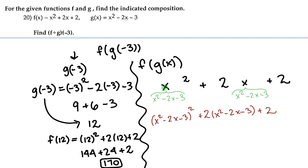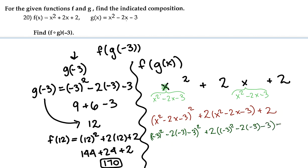From here you have the option of foiling this out and combining like terms, but that's more work than necessary because you can just plug in negative 3 for x and get the same result. So let's plug negative 3 into the composed function: negative 3 squared minus 2 times negative 3 minus 3, all squared, plus 2 times negative 3 squared minus 2 times negative 3 minus 3, plus 2.